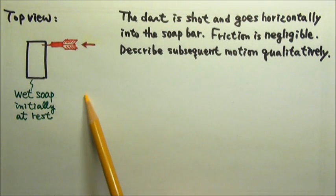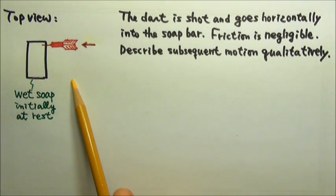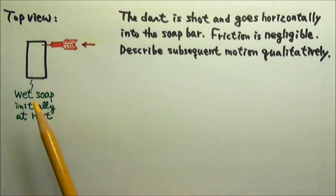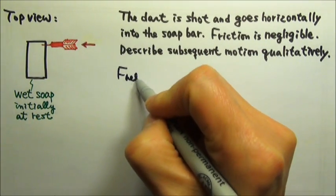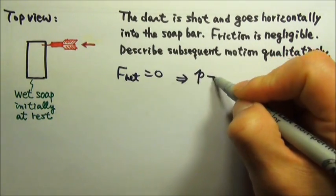This is a collision problem happening on a frictionless horizontal surface. So we have net force on the system that is zero. If the net force on the whole system is zero, then we have the conservation of momentum.